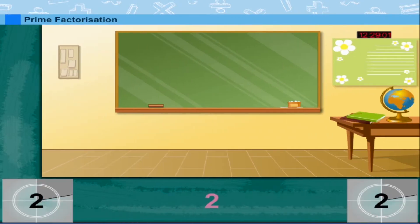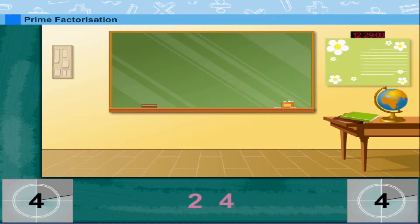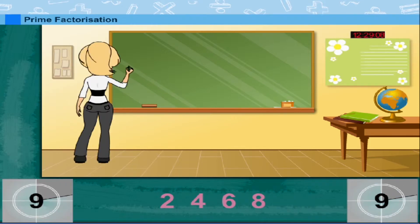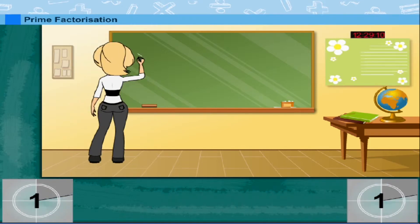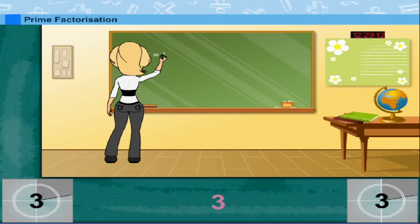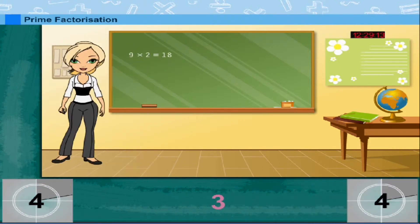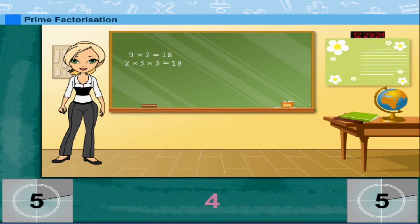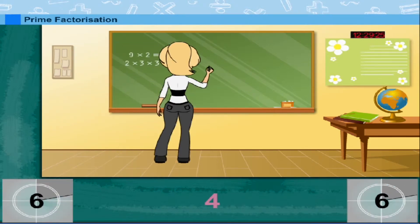Prime Factorization. Rosie is here to explain prime factorization. She writes 9 × 2 = 18, then breaks down 9 into its factors: 3 × 3. So she writes 2 × 3 × 3 = 18. These are prime factors.